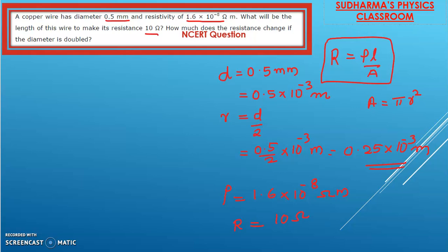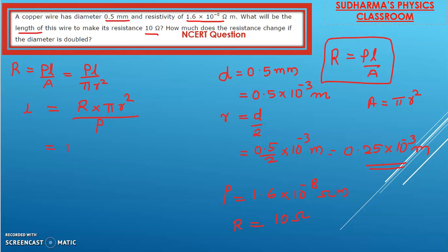We have to find the length of the wire to make the resistance 10 ohm. Using the formula R = ρL/A = ρL/(πr²), we rearrange to get L = R × πr² divided by ρ. Substituting: R equals 10 ohm, π is 3.14, and r² is (0.25 × 10⁻³)² divided by resistivity 1.6 × 10⁻⁸.